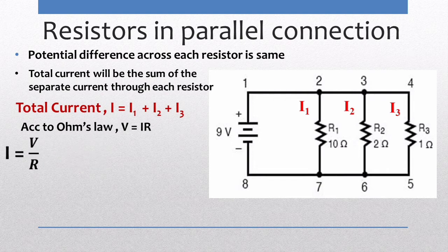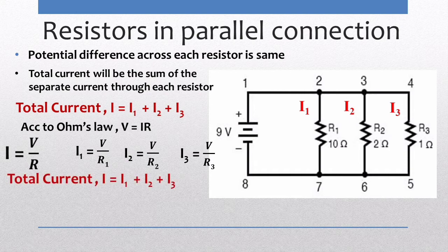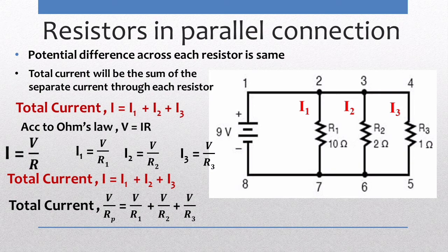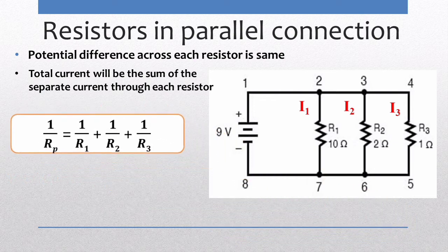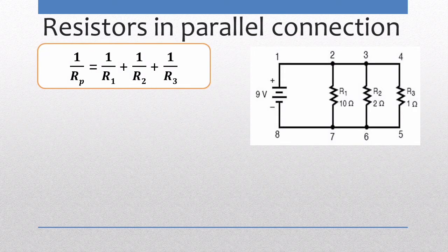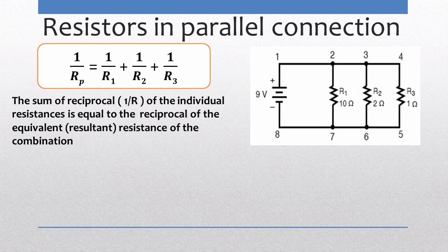According to Ohm's law, I = V/R. So I1 = V/R1, I2 = V/R2, and I3 = V/R3. The total current I = V/R1 + V/R2 + V/R3. Since I = V/Rp, dividing through by V gives the equation: 1/Rp = 1/R1 + 1/R2 + 1/R3. This means the sum of the reciprocals of the individual resistances equals the reciprocal of the equivalent resistance.